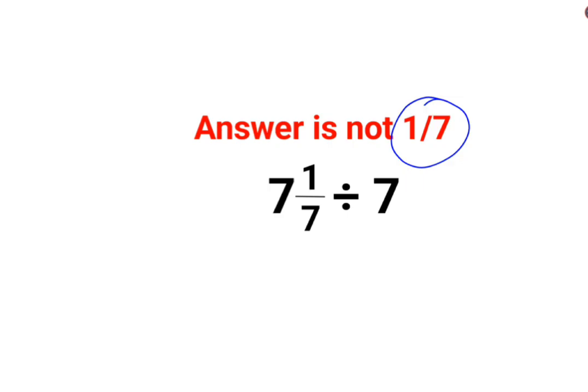See, a lot of people thought that 7 1/7 divided by 7, the answer is like 7 and 7 gets cancelled, we are just left with 1/7. No, that is not how these things work.